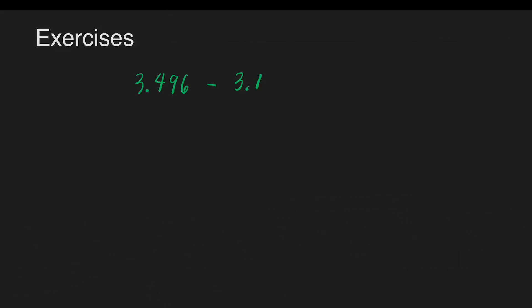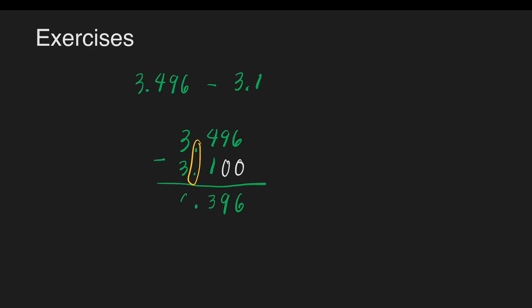Let's have some exercises. The first one is 3 and 496 thousandths minus 3 and 1 tenth. Align the decimal points and write zeros in the empty spaces. We can already subtract: 6 minus 0 is 6, 9 minus 0 is 9, 4 minus 1 is 3, copy the decimal point, and 3 minus 3 is 0. So our answer is 396 thousandths.